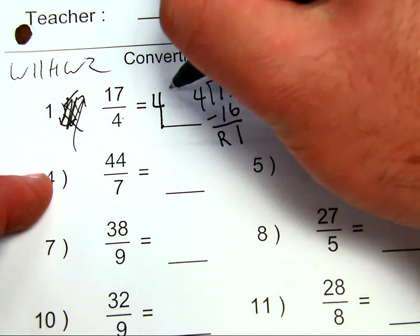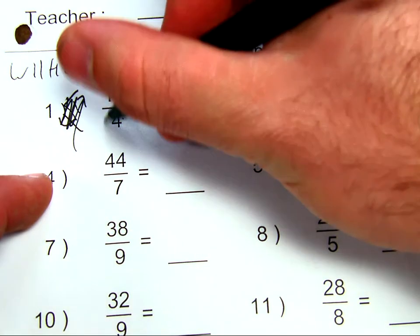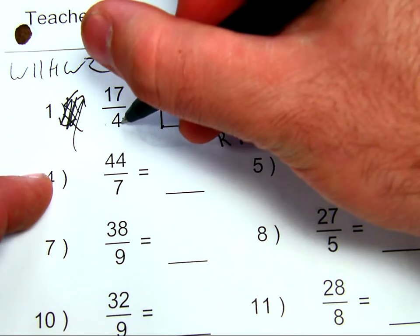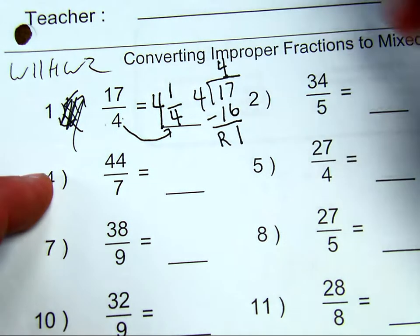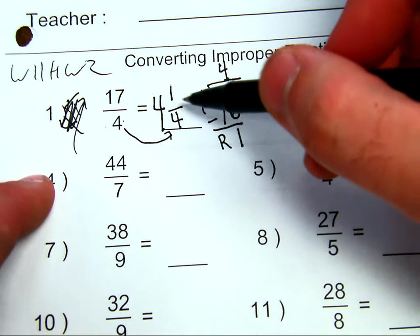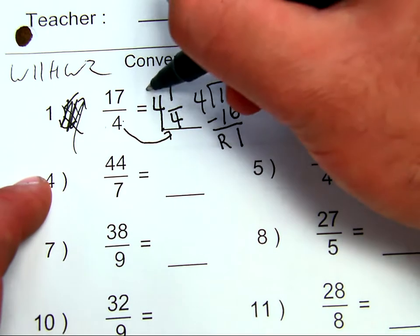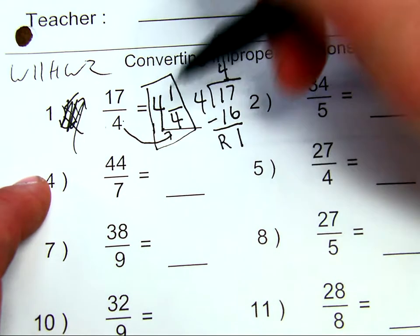So, what's my remainder? My remainder is 1. We're still thinking in fourths, so I'm just going to bring that 4 over, make my new denominator. I have 4 and 1 fourth as my final answer. That's how I convert to a mixed number.